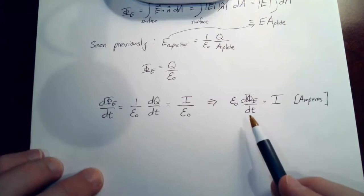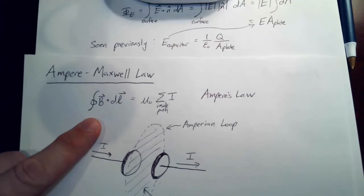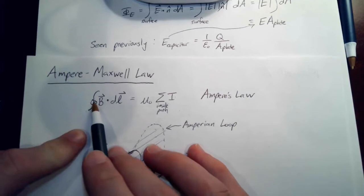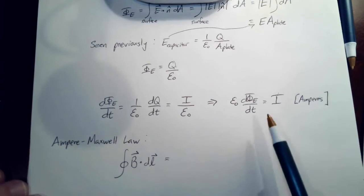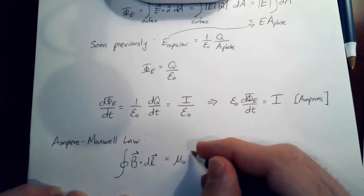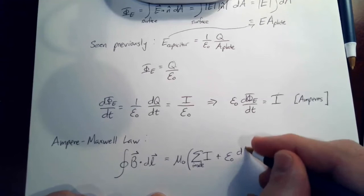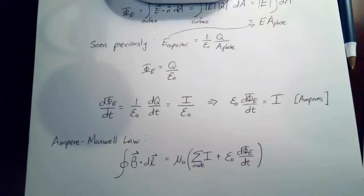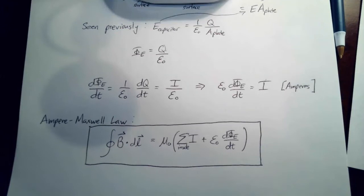So now let's add this into Ampere's law. Wherever we see current, we're also going to add a contribution due to the changing electric flux. Ampere's law tells us the path integral of the magnetic field around a closed path equals μ₀ times the current passing through the path. Now we add this other current-like contribution from the changing electric flux. This is called the Ampere-Maxwell law — it's Ampere's law with Maxwell's correction.